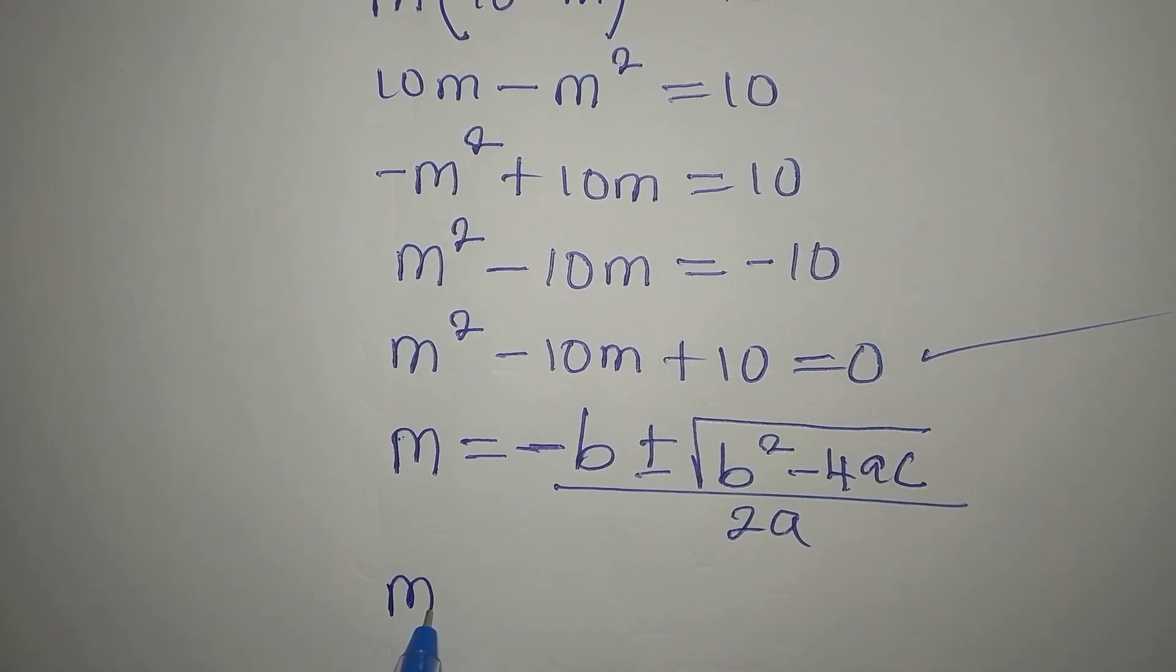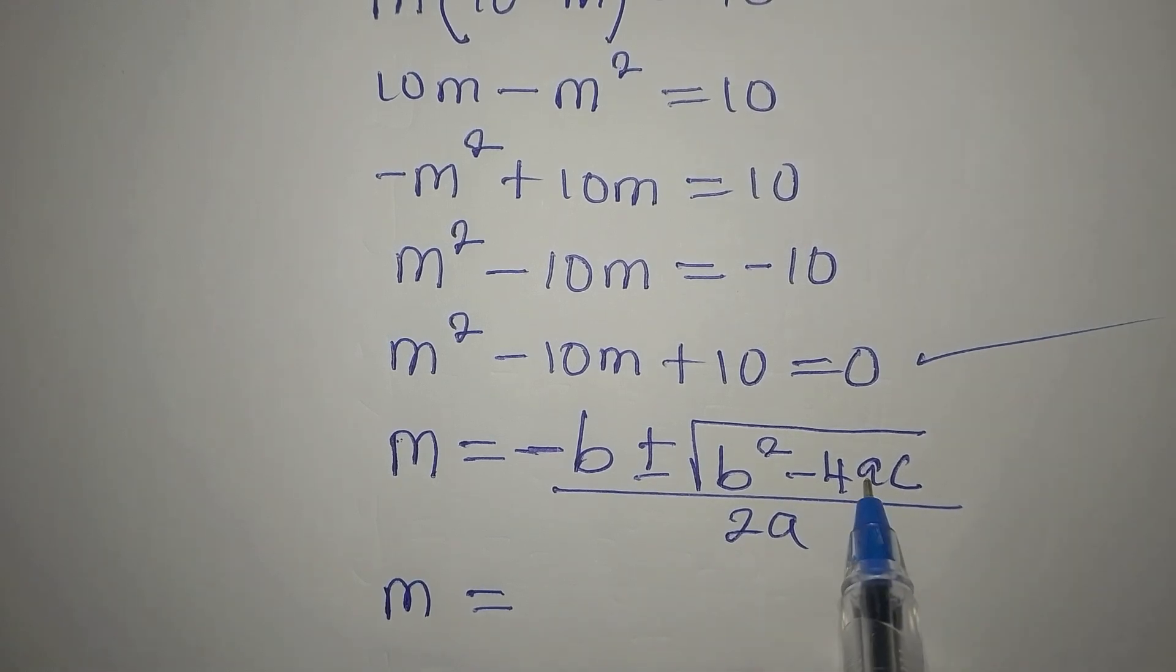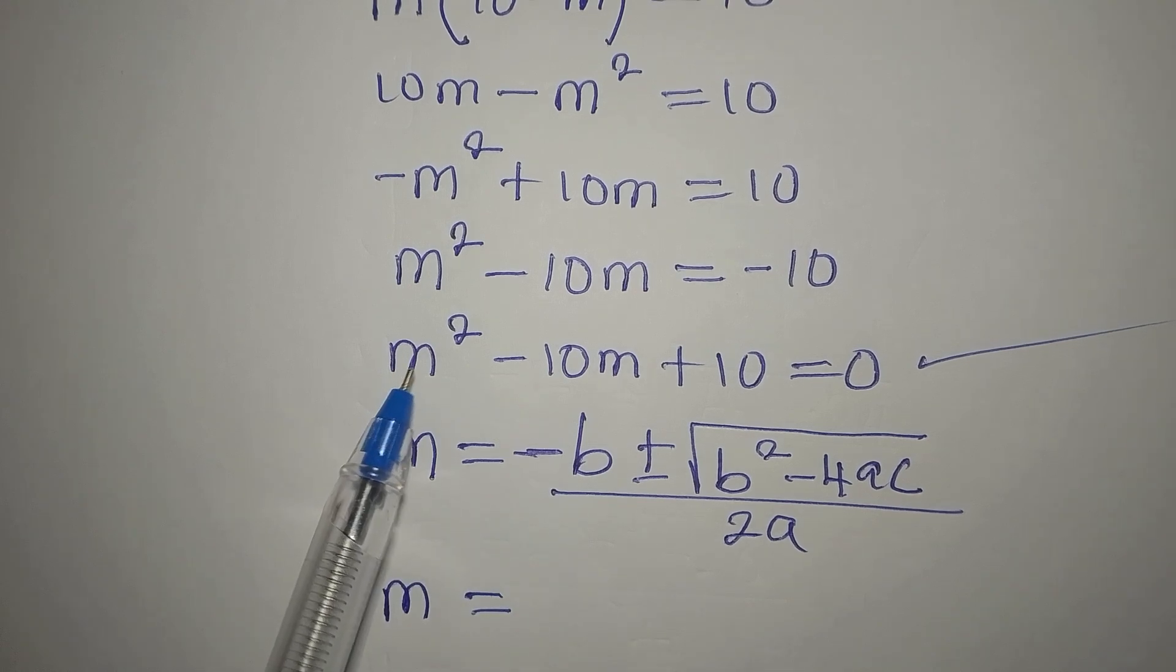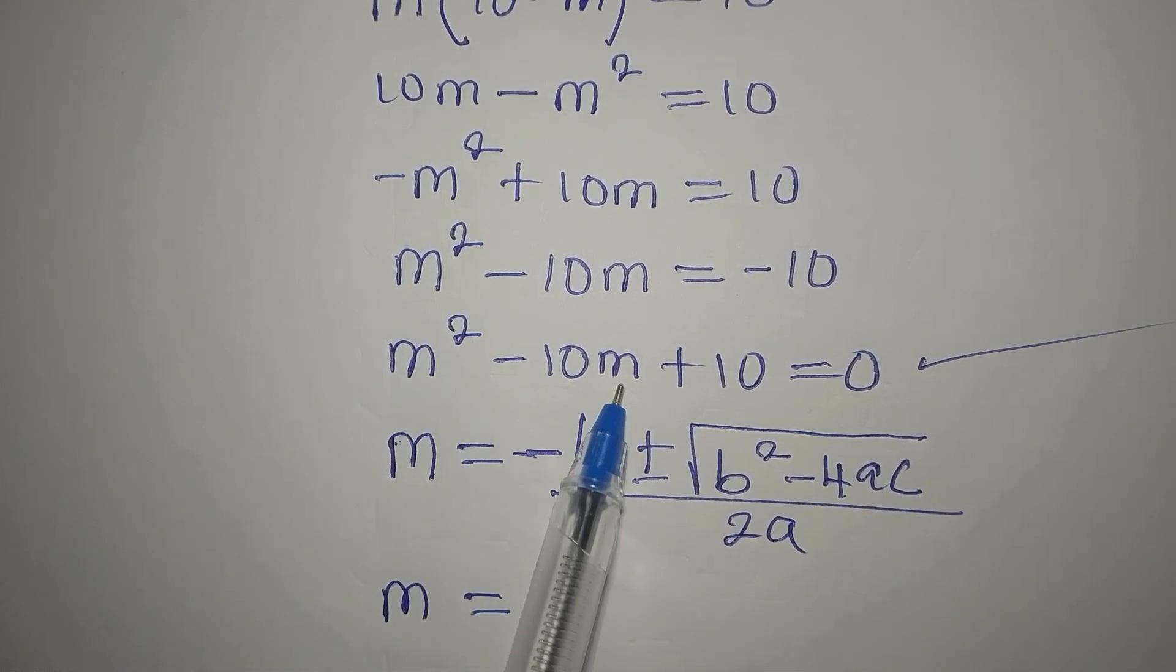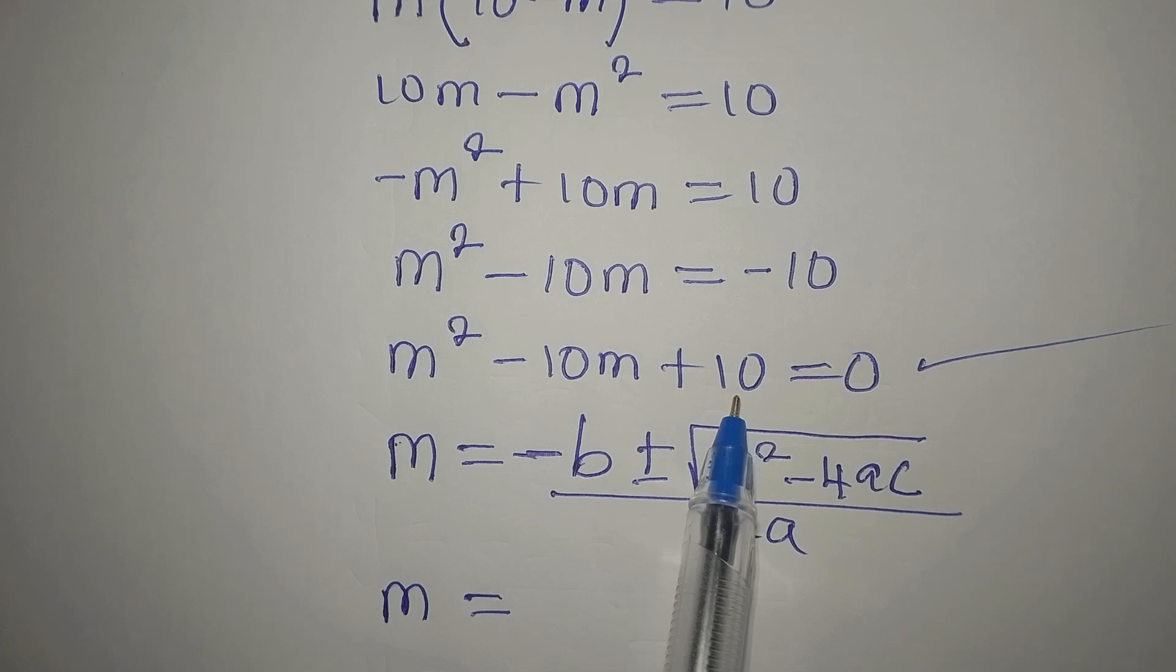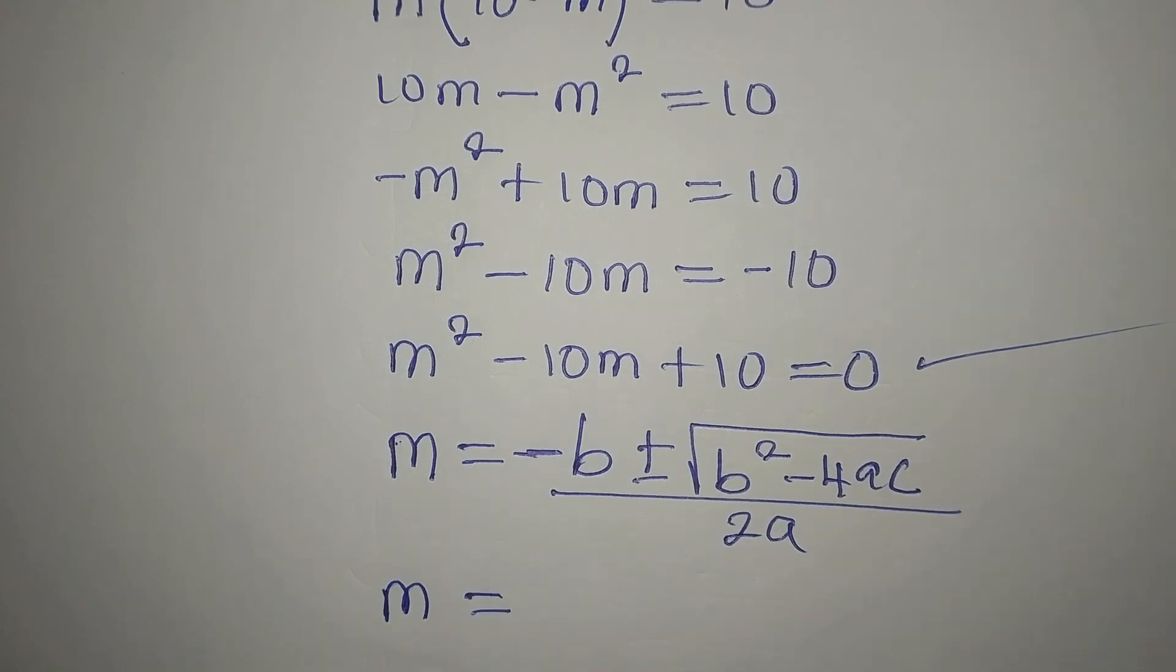So now, our m will be, first of all, you need to identify your a, b, c. A is the coefficient of m squared. That is 1. B is the coefficient of m. That is minus 10. And c is the constant, which is positive 10. Do not leave out this negative when picking the value of b.